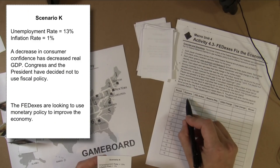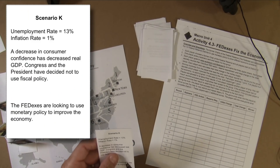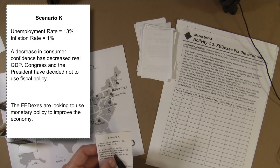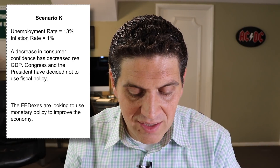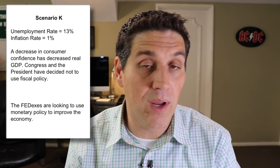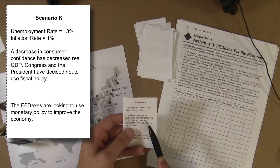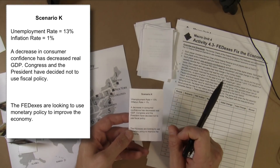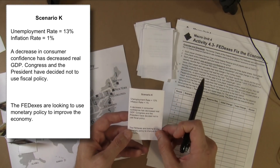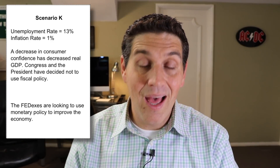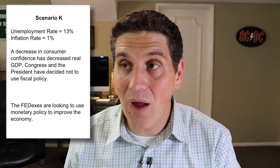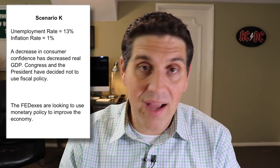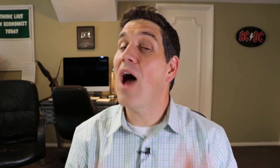This one says: unemployment rate is 13%, the inflation rate is 1%, a decrease in consumer confidence has decreased real GDP. Congress and the president have decided not to use fiscal policy. The FedEx's are looking to use monetary policy to improve the economy. So you're trying to figure out what is the problem and what do the FedEx's want to do to help the economy.